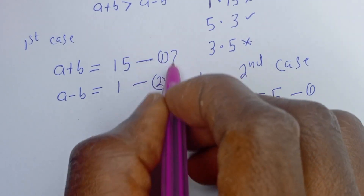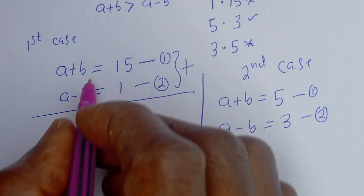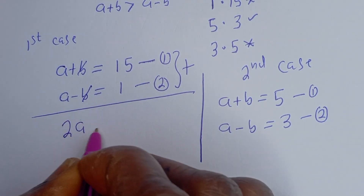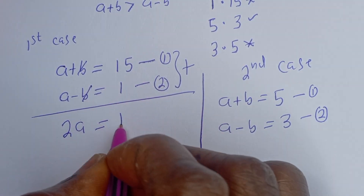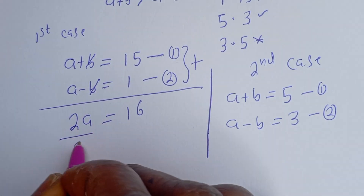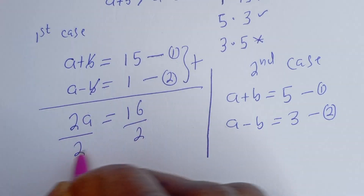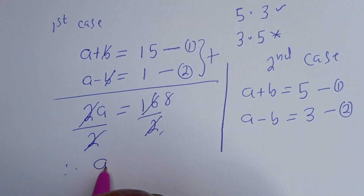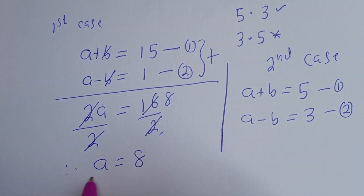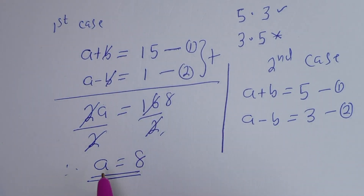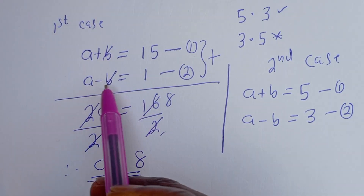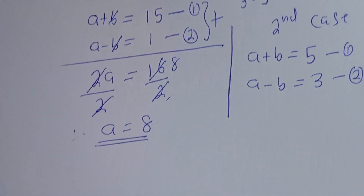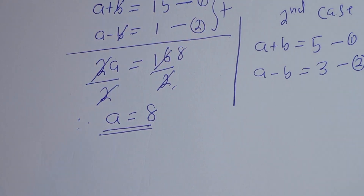Going back to the first case, let's add the two equations. We get a + a = 15 + 1, that is 2a = 16. Let's divide both sides by 2 — this cancels, and we have a = 8. We now have the value of a. In order to solve for b, let's substitute for a in equation 1.